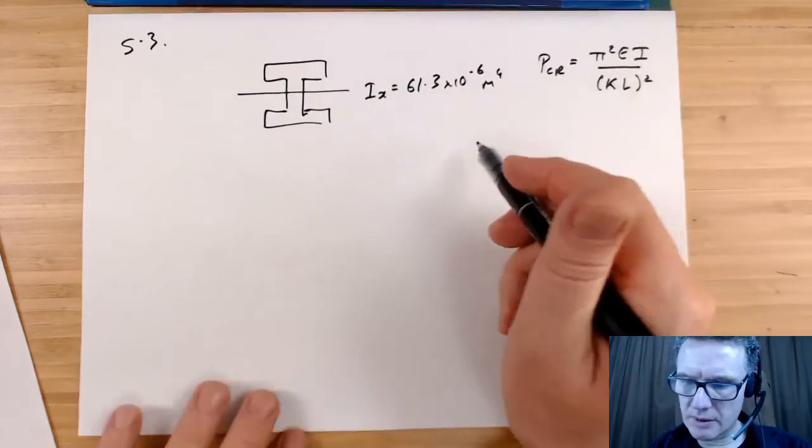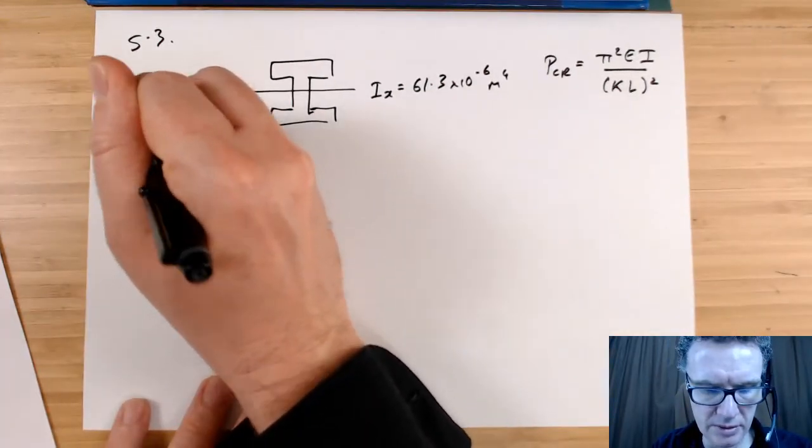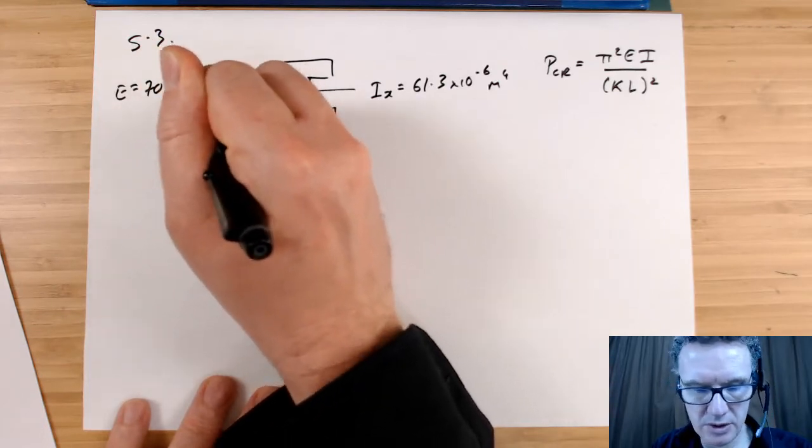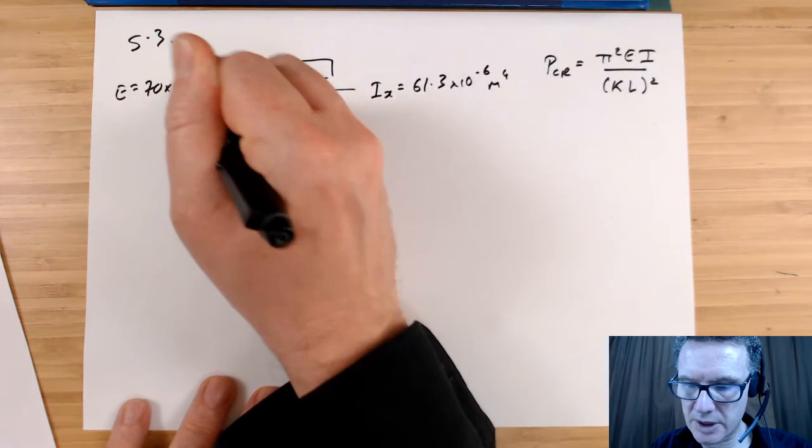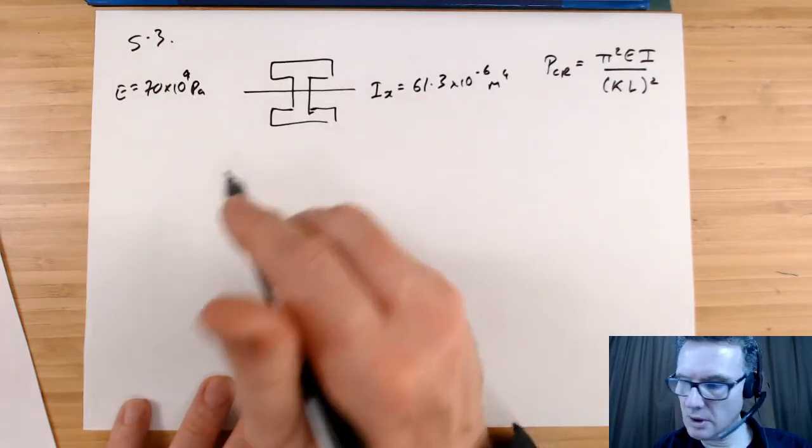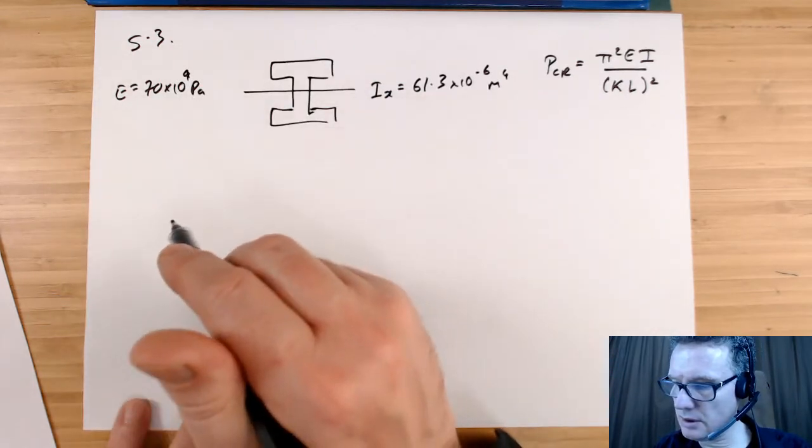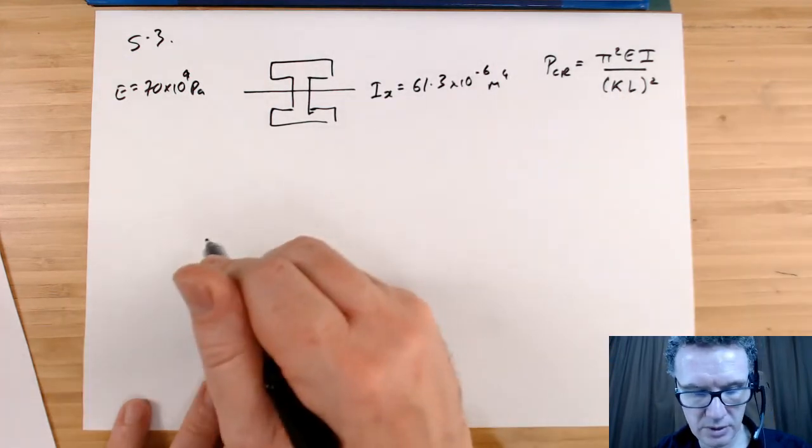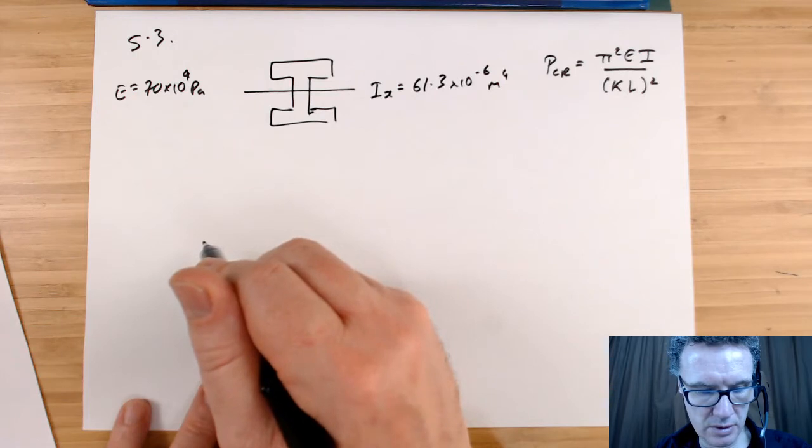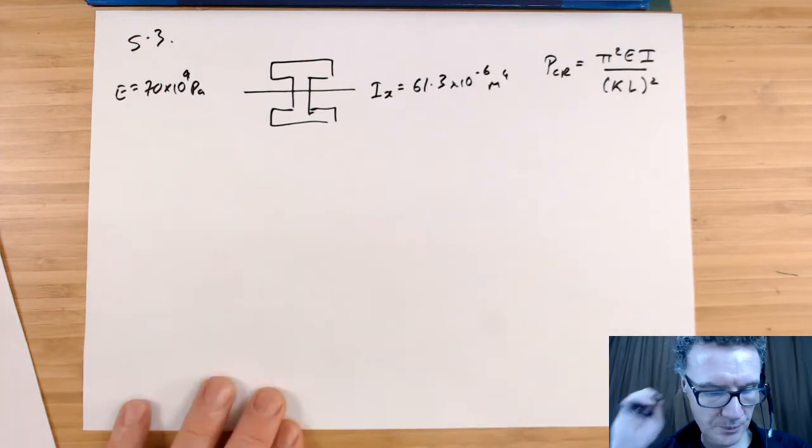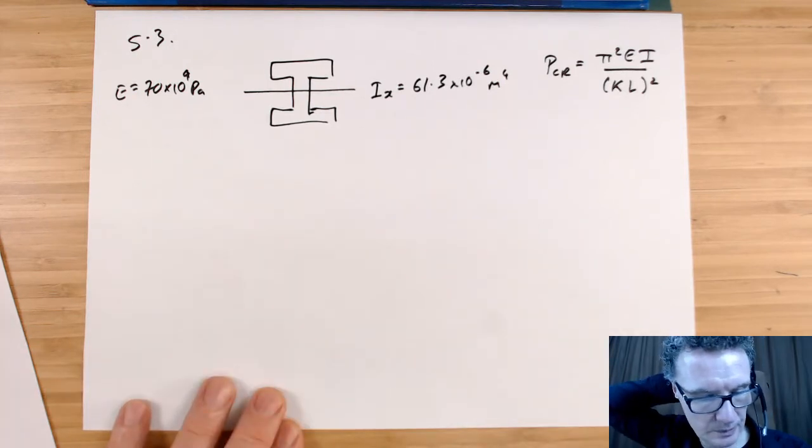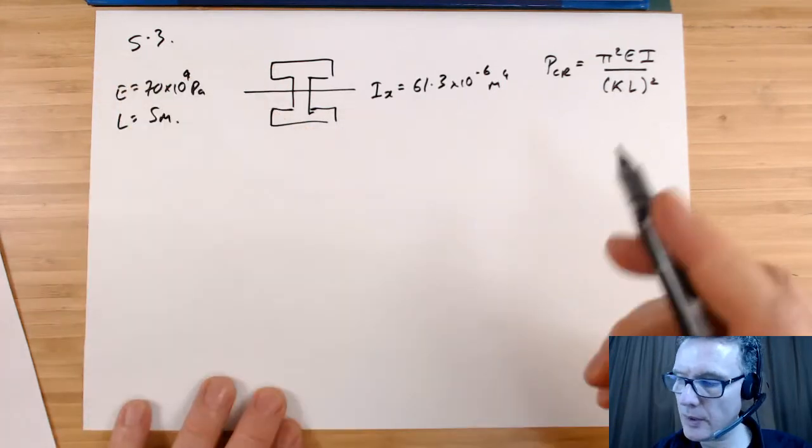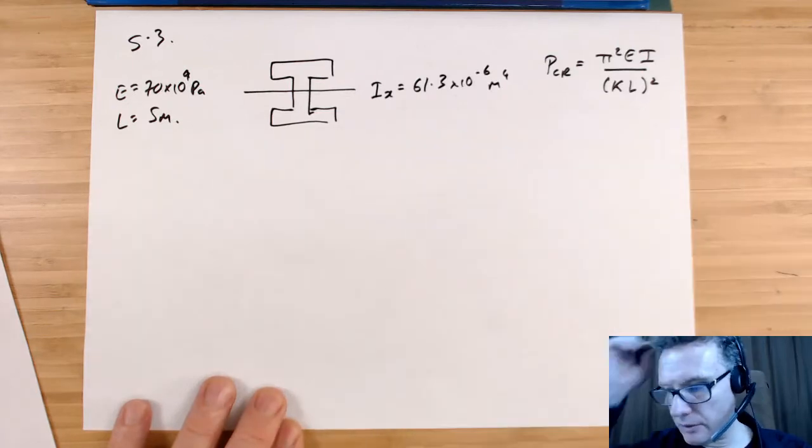So the other data that I want to put in then is E equals 70 times 10 to the 9, gigapascals. What else? I've got the I_x, what about the L, the length of it? Five meters long, five meters long. So let's whack this in first.